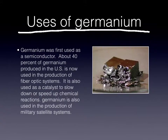Uses of Germanium. Germanium was first used as a semiconductor. About 40% of Germanium produced in the US is now used in the production of fiber optic systems. It is also used as a catalyst to slow down or speed up chemical reactions. Germanium is also used in the production of military satellite systems.